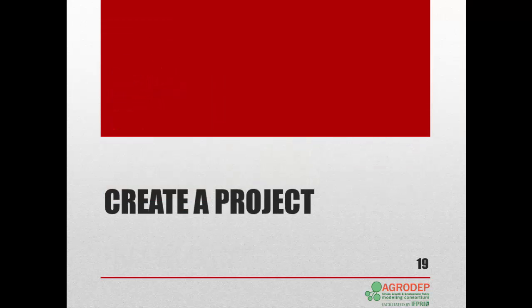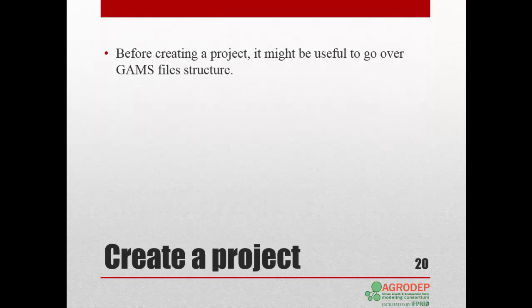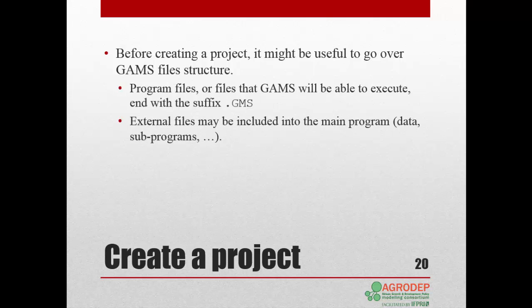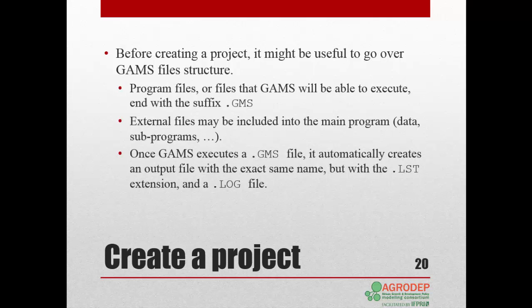Let's discuss more about creating a project. We need to go over the GAMS file structure. Program files, or files that GAMS will be able to execute, end with the suffix .gms. You can also include external files into the main program, such as data or subprograms. Once GAMS executes a .gms file, it automatically creates an output file with the exact same name, but with the .lst extension, along with a .log file. The log files provide information on the running result, specifically solution and error status.